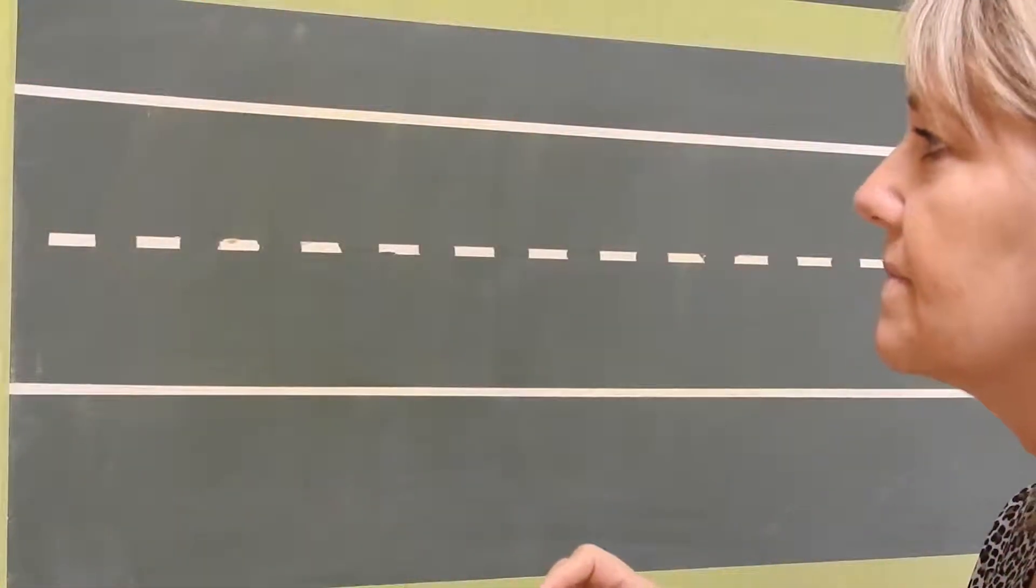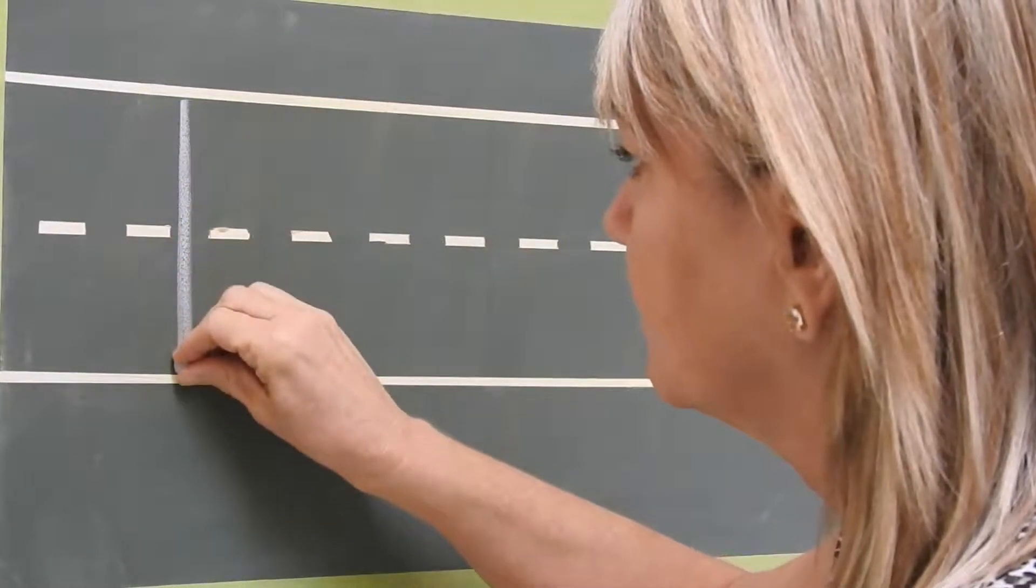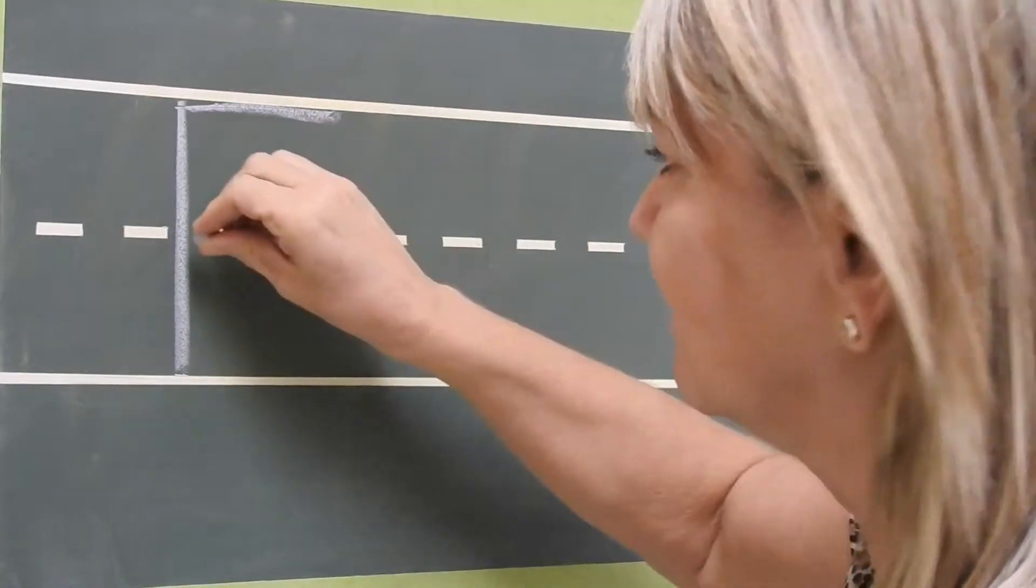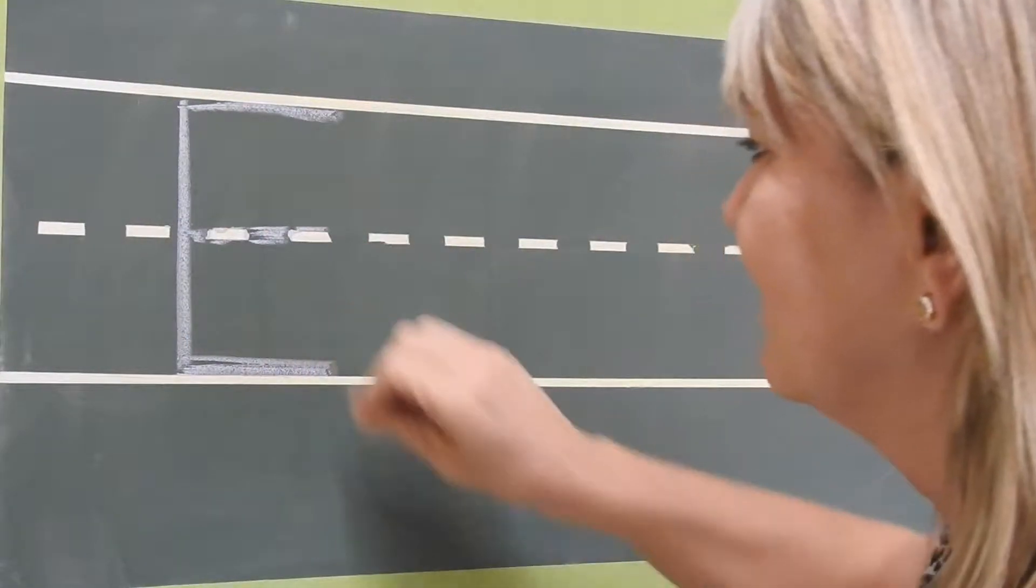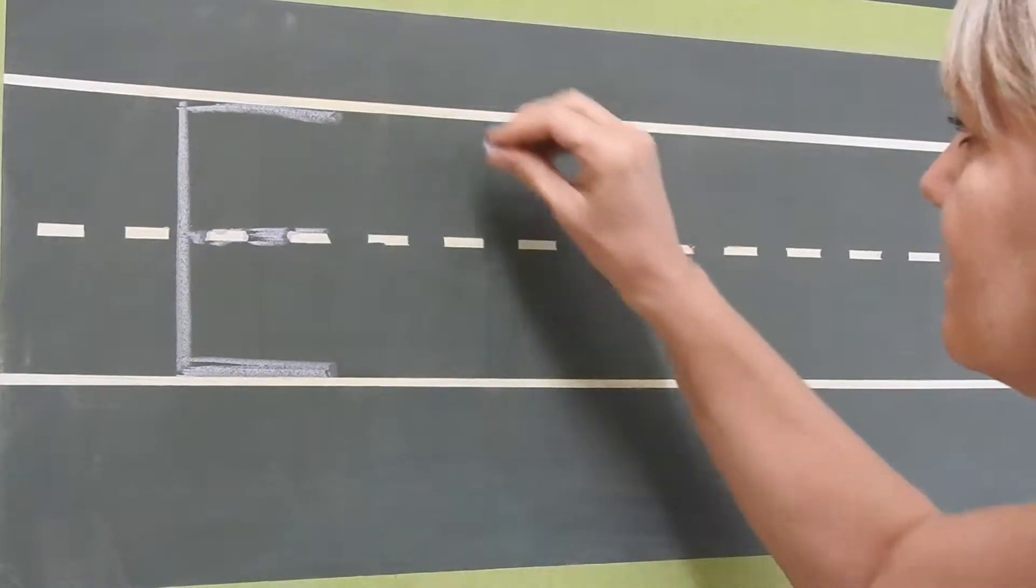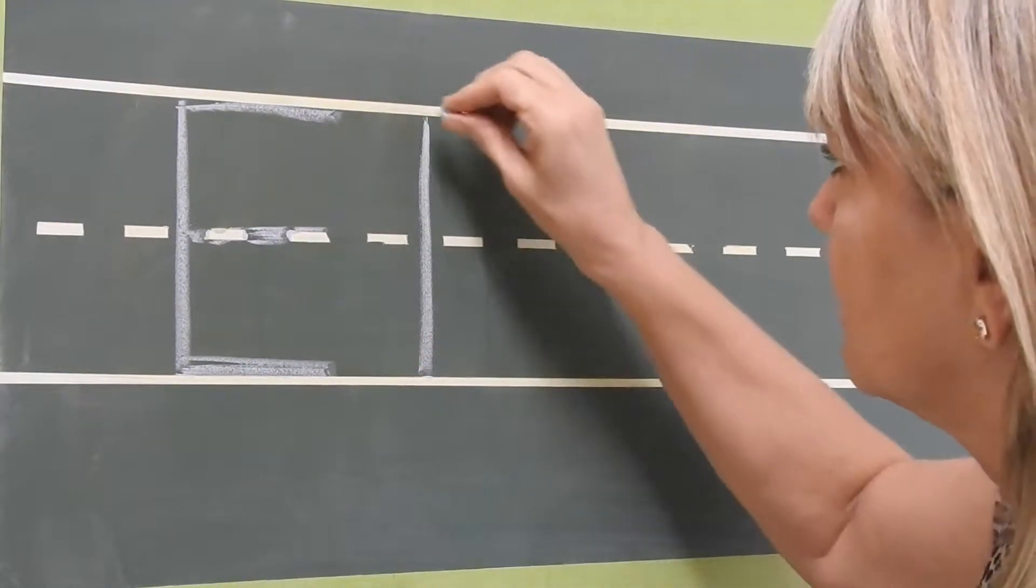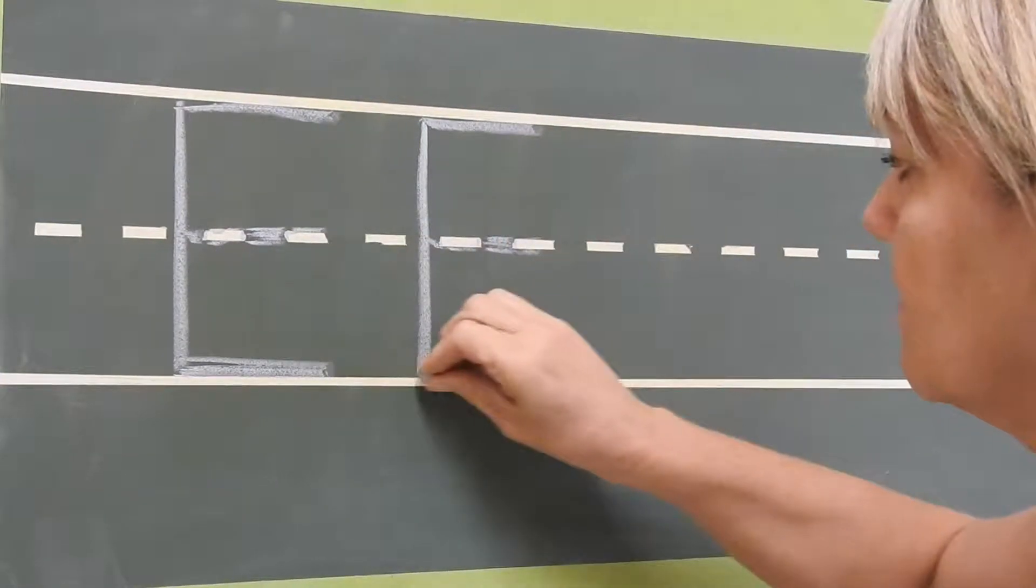When we make the letter E we start at the top for the uppercase. Big line down jump, little line top, middle and bottom. Let's look at that again. Start at the tippy top, big line down, jump, little line top, middle and bottom.